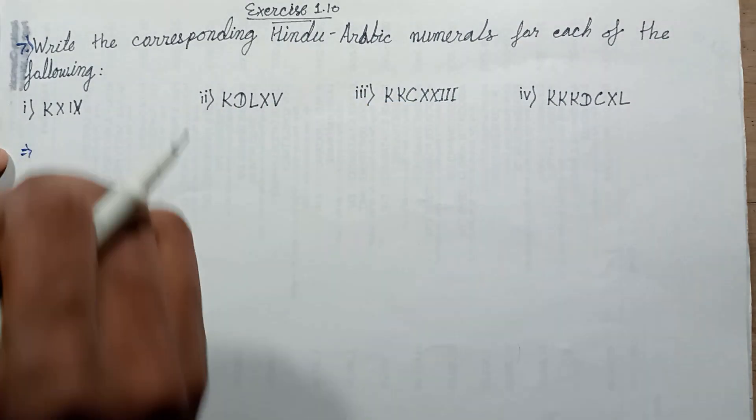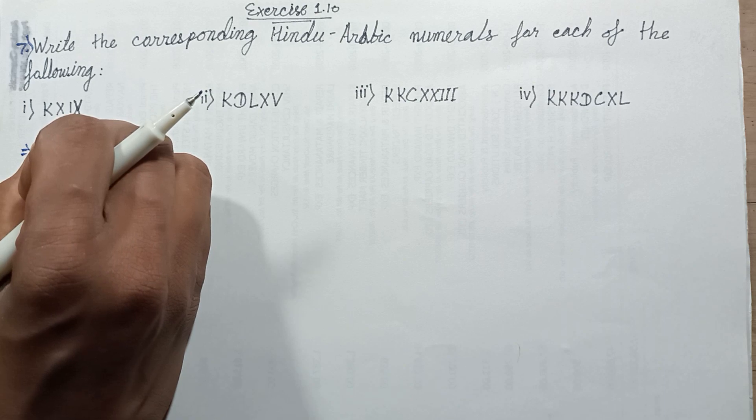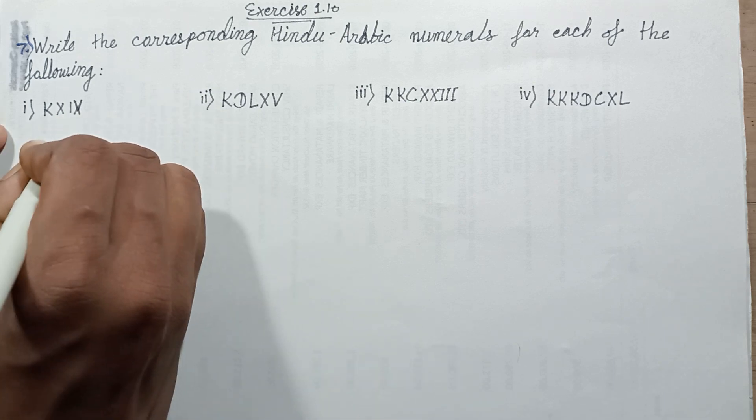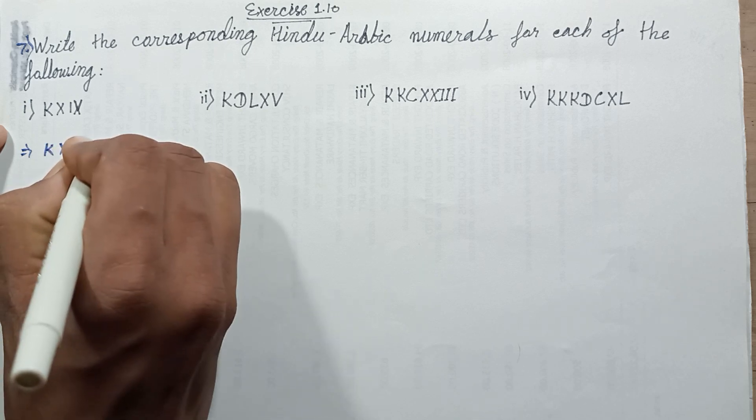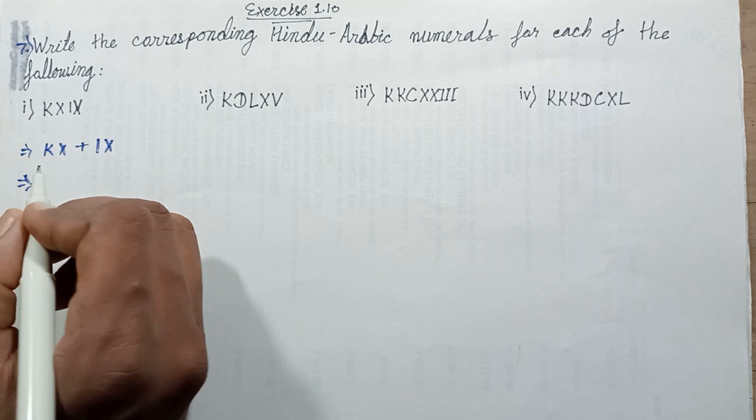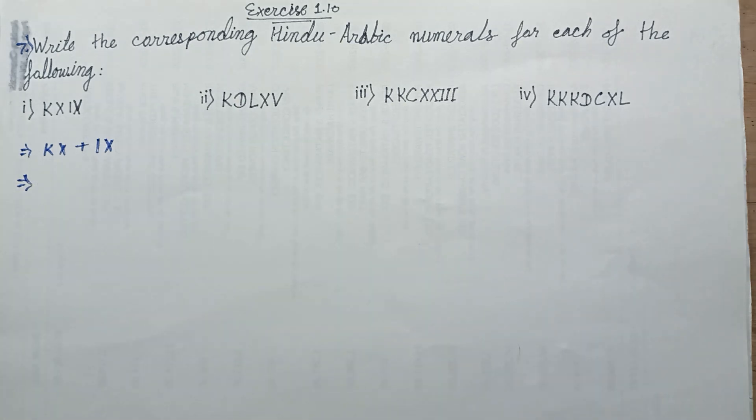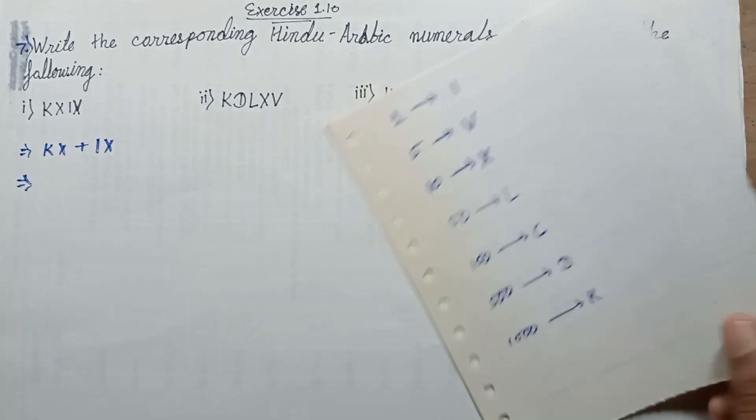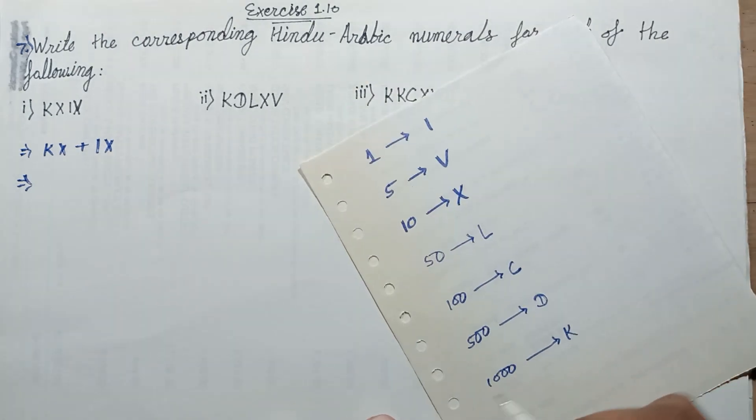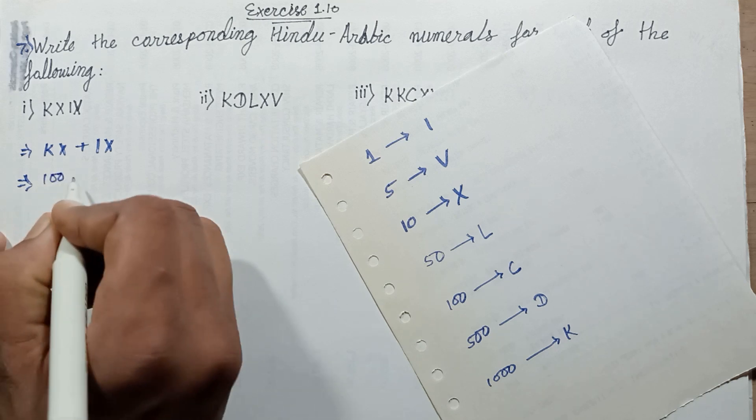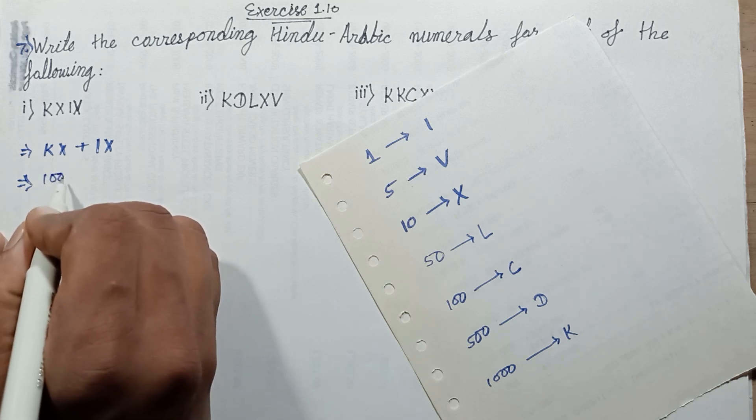First time, write this Roman numeral in expanded form: KX plus IX. This KX represents one thousand and ten. K represents one thousand. Thousand plus thousand plus ten.